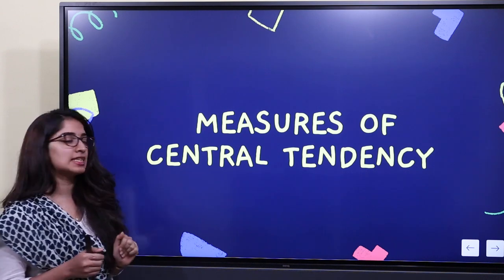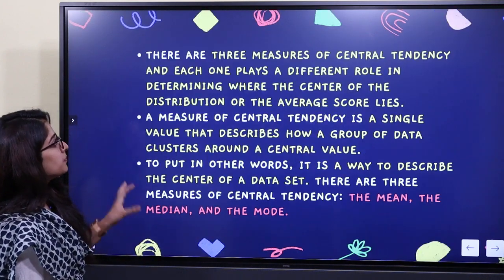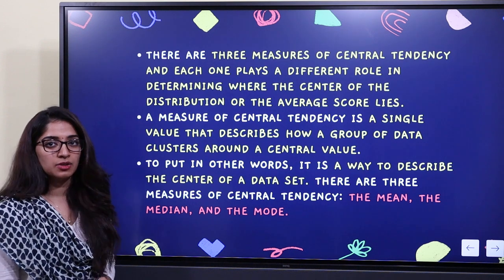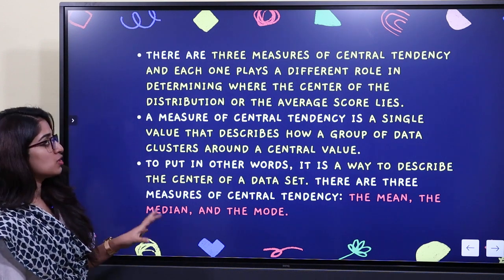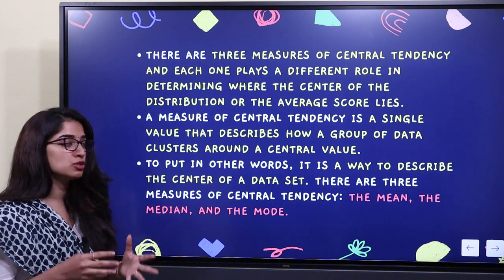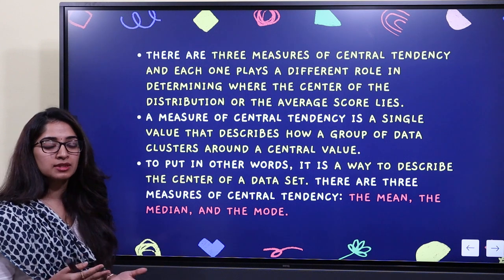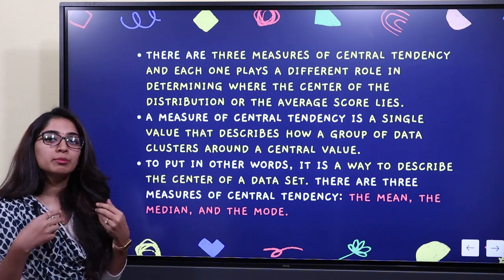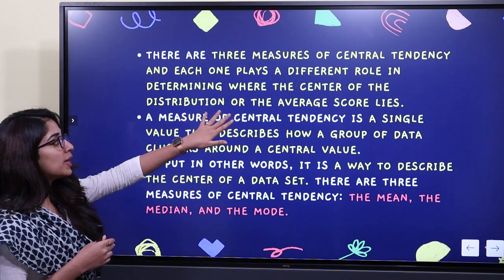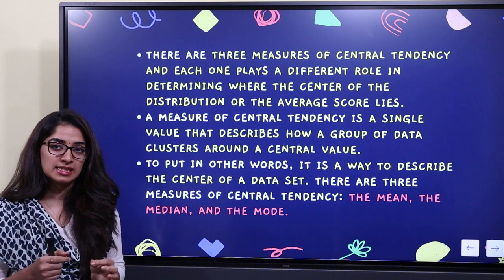So what is Central Tendency? Central Tendency actually consists of three measures, and each plays a different role. The purpose of Central Tendency is that it helps us determine where the center of a distribution, or the average score, lies.